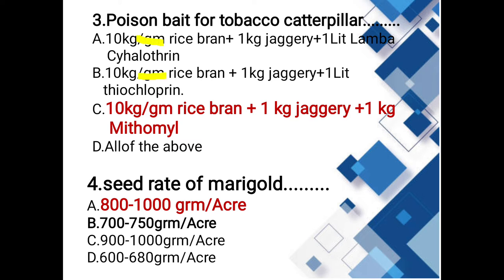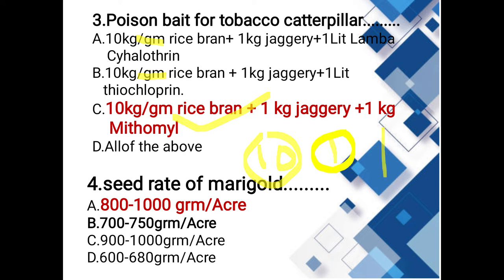The options are: 10 kg rice bran, 1 kg jaggery, 1 litre thiacloprid; or 10 kg rice bran, 1 kg jaggery, 1 kg methomyl. The ratio is 10:1:1. The correct answer is 10 kg rice bran, 1 kg jaggery, and 1 litre of methomyl.